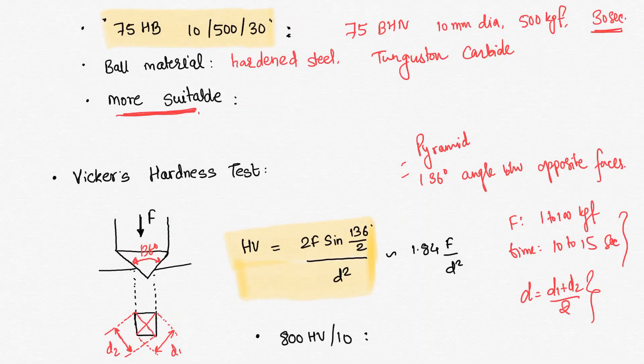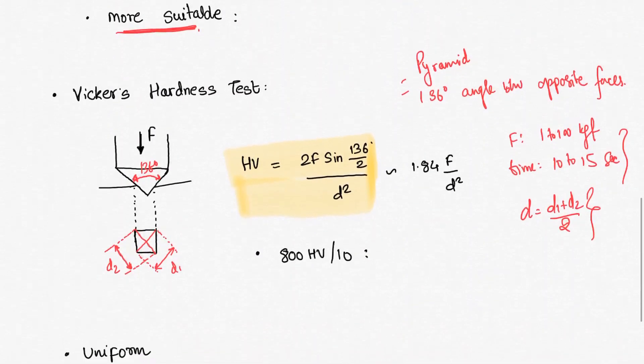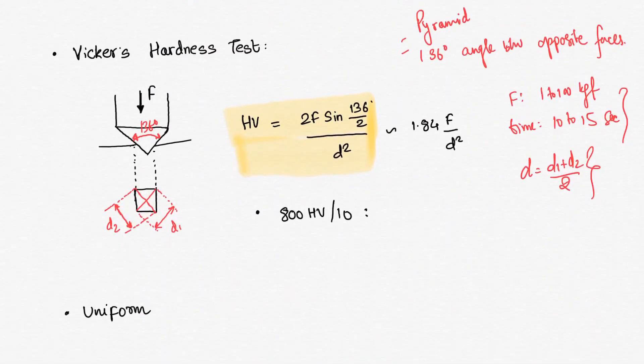If we do Vickers hardness test on the same material, that will give us more uniform results, much better results. But why don't we use it then? We don't use it because it is more expensive as compared to Rockwell test and Brinell test. Those are easily available, we prefer them only.